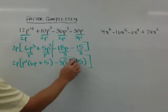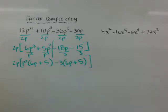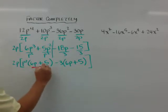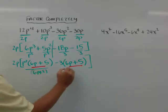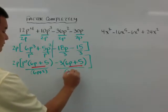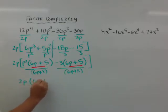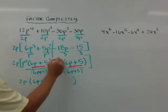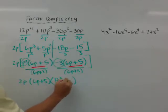So that's just a quick check to make sure your signs are good, as well as the fact that these two parentheses are still the same. So what I can do now is pull the 6p plus 5 out of both of these. And I'm left with 2p times 6p plus 5 times p squared minus 3.